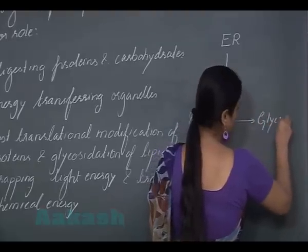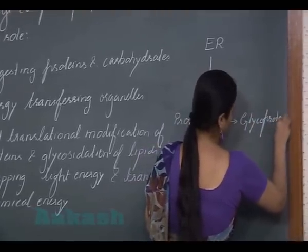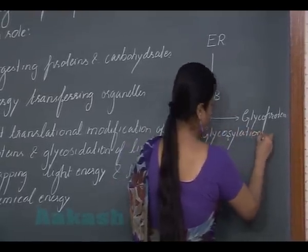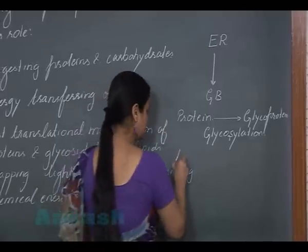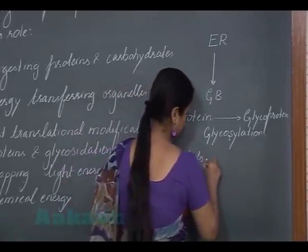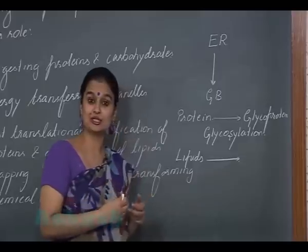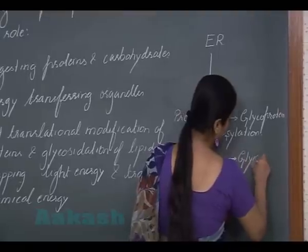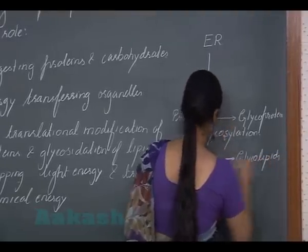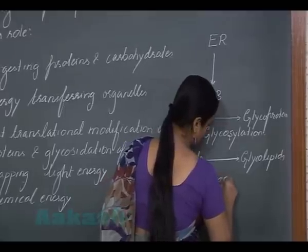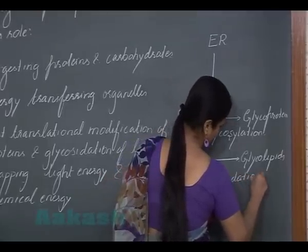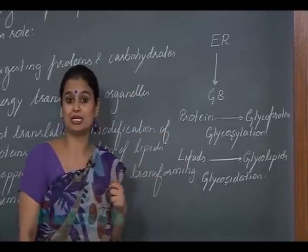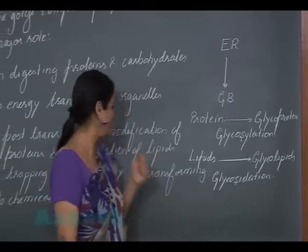The addition of carbohydrate to proteins results in the formation of glycoprotein, a process known as glycosylation. Similarly, lipids are also modified in the Golgi bodies — carbohydrate or sugar chains are added to lipids, resulting in the formation of glycolipids. This process is also called glycosylation. These are the two important modifications performed by the Golgi complex.